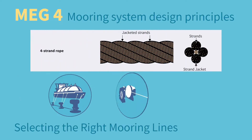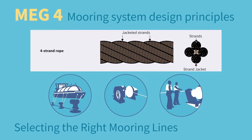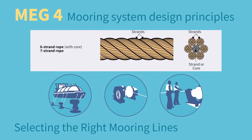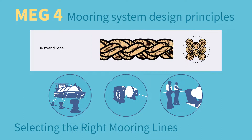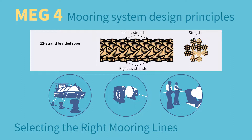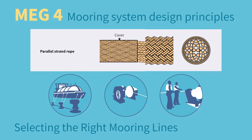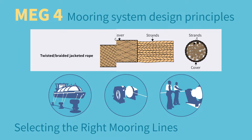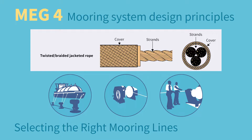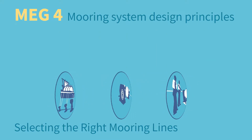You will find improved guidance on selecting the right mooring lines in section 5: Mooring Lines. If you are selecting a mooring line, engaging with the mooring line manufacturer will help you understand the most appropriate line type for the ship based on the operation and the intended service.